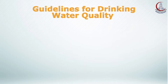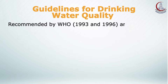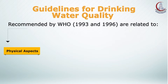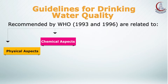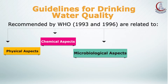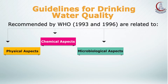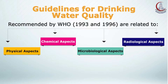The guidelines of drinking water quality recommended by the WHO in 1993 and 1996 are related to physical aspects, chemical aspects, microbiological aspects, and finally radiological aspects.